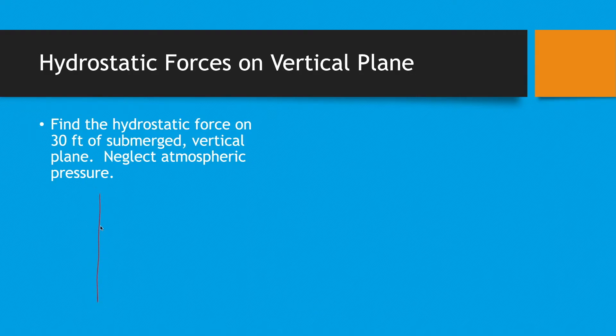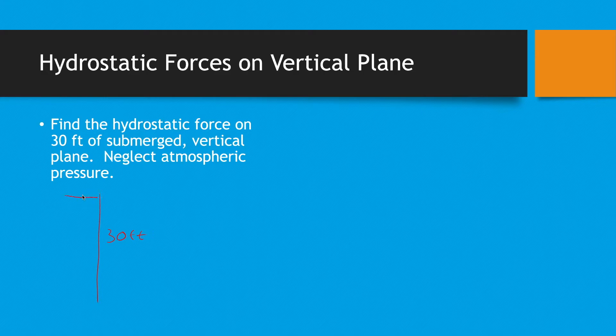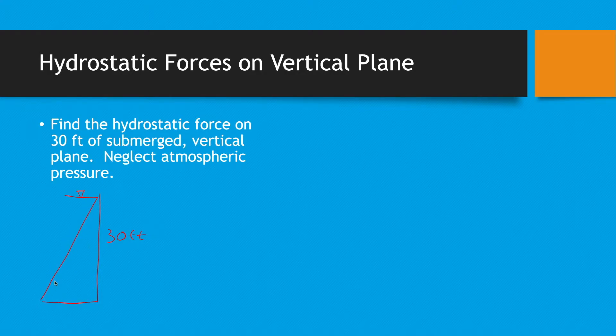Alright, so we got our vertical plane. It's going to be 30 foot. And then we have our water surface at the atmosphere. And then we're going to have that linear increasing pressure. So at this point, at 30 foot, it'll be equal to rho g h. That'll be our pressure here. Or maybe we'll call it P30.